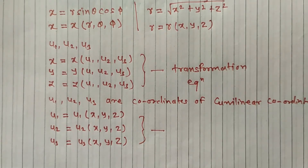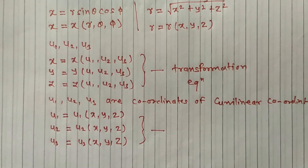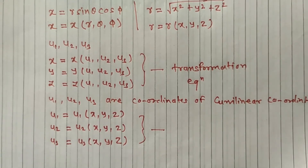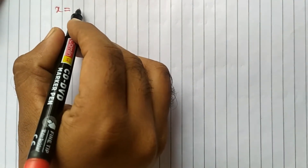If you want to visualize a coordinate system further, you have to assume that there is some general coordinate system from which you can go to some particular coordinate system, like the Cartesian coordinate system, cylindrical coordinate system, or spherical coordinate system.